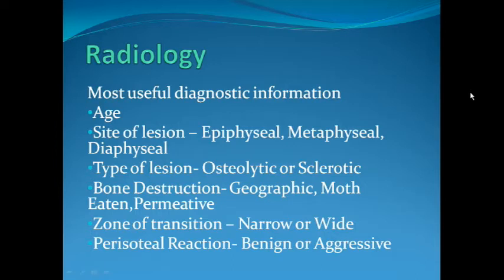Some tumours occur only in children with open physes, and some tend to occur after the age of skeletal maturity. The site of the lesion is equally important — any long bone can be divided into three parts: epiphysis, metaphysis, and diaphysis. Every tumour has a predilection for either the epiphyseal, metaphyseal, or diaphyseal site. Simply knowing the age and site of the lesion can tell a lot about the diagnosis of a bone tumour.